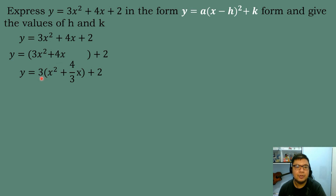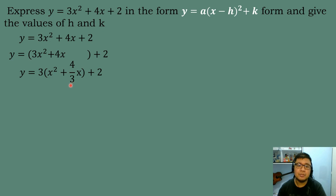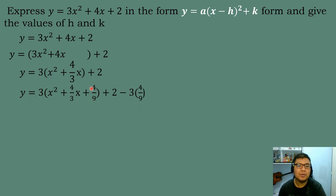After factoring, we can now perform completing the square. We take the numerical coefficient of our linear term, which is 4/3, divide it by 2 to get 2/3, then square the answer: 2/3 times 2/3 equals 4/9. So we add 4/9 inside the parentheses.